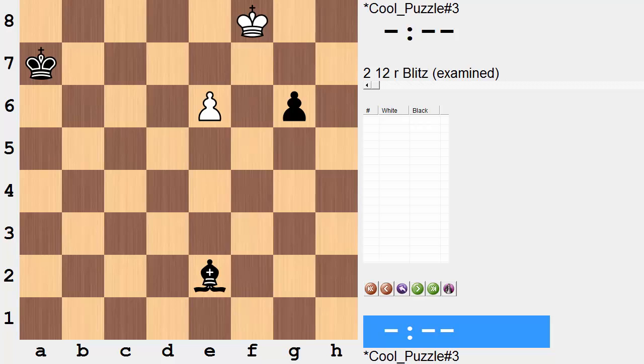It's an endgame study by Richard Reddy that was published in 1928. It's white to move. If you'd like to, go ahead and pause the video. See if you can find the best continuation for white.